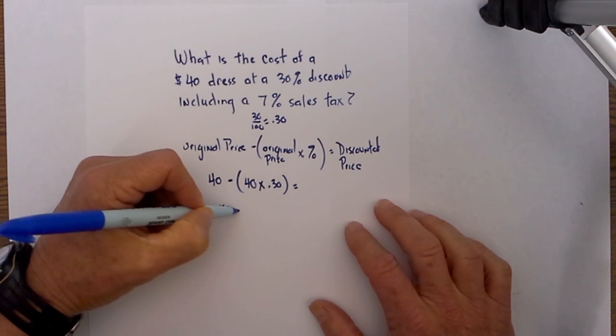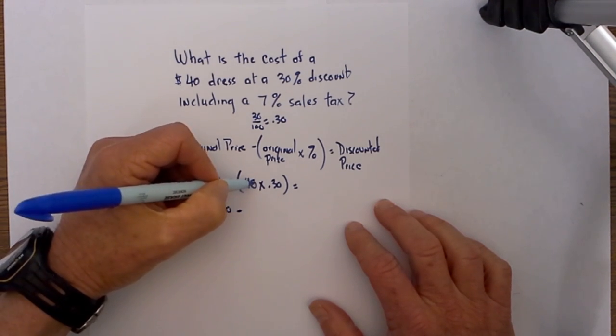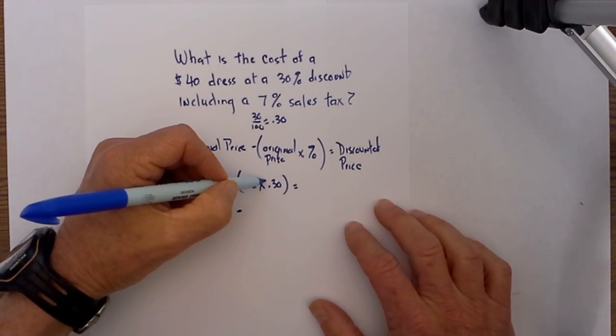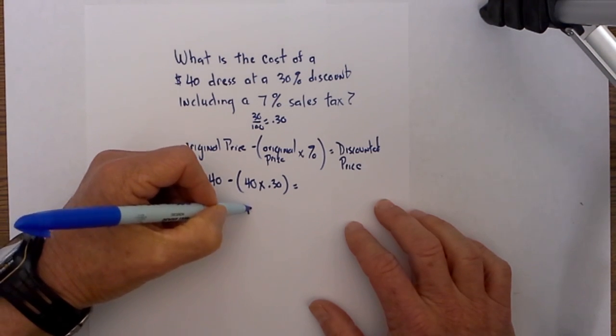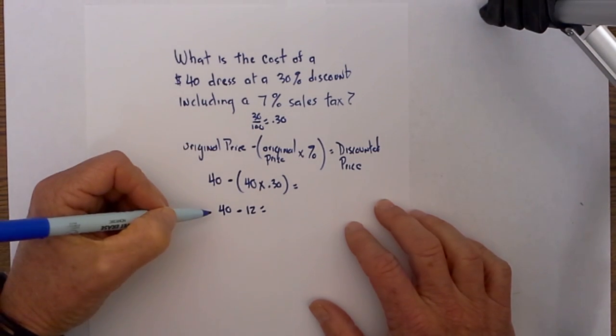I then have 40 minus 40 times 0.3, which equals 12, which is equal to our new discounted price of $28.